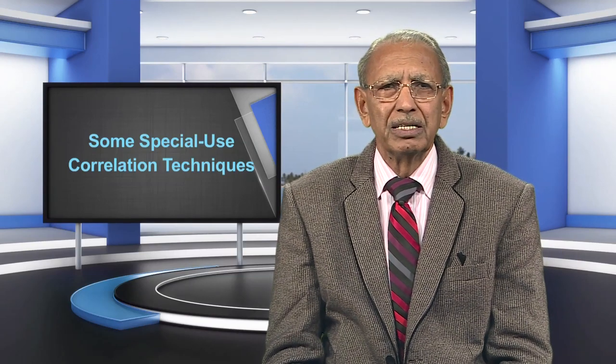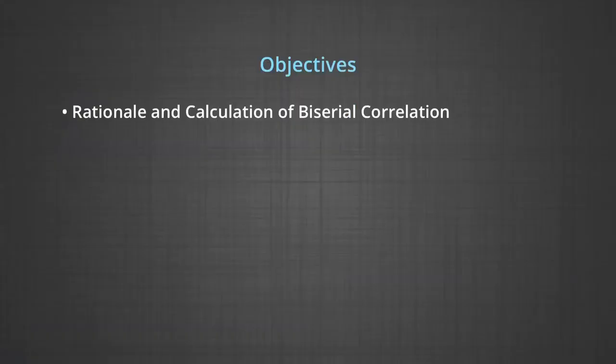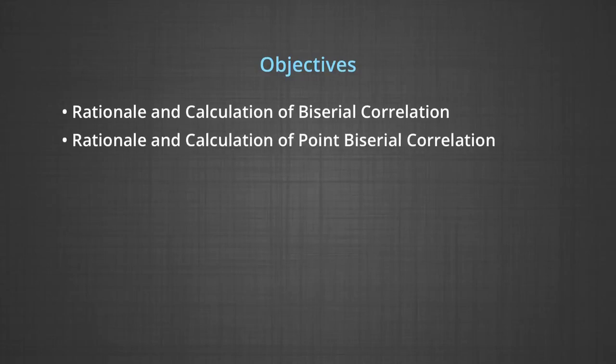The objectives of this module are to give an understanding of the following: the rationale and calculation of biserial correlation, point biserial correlation, and phi coefficient.